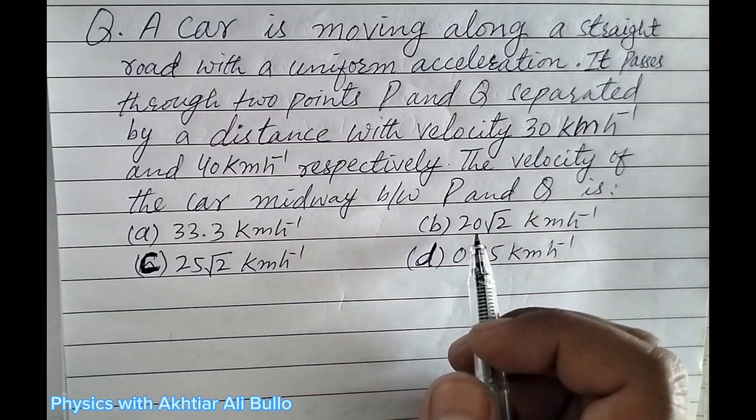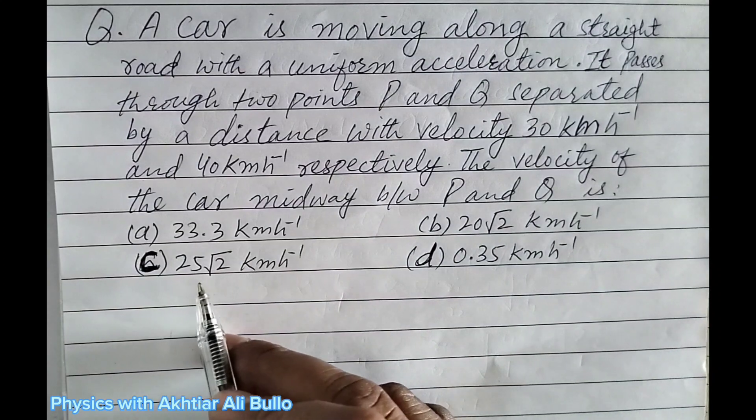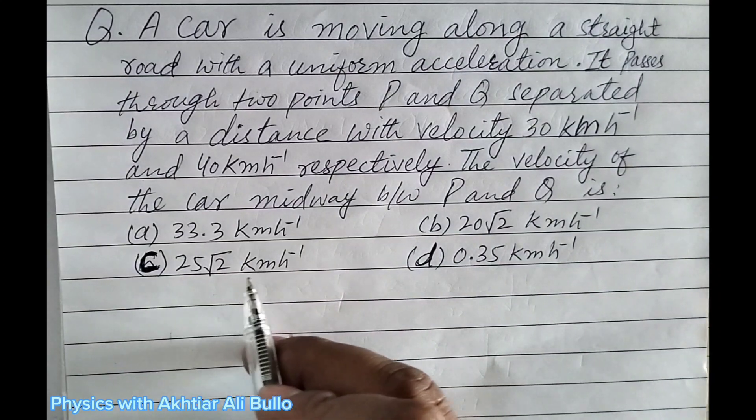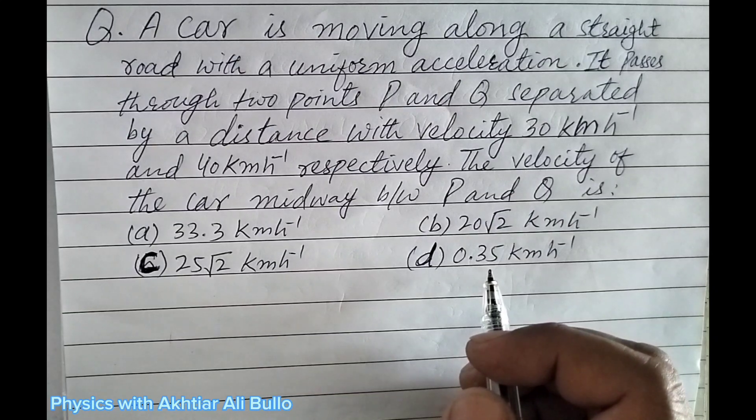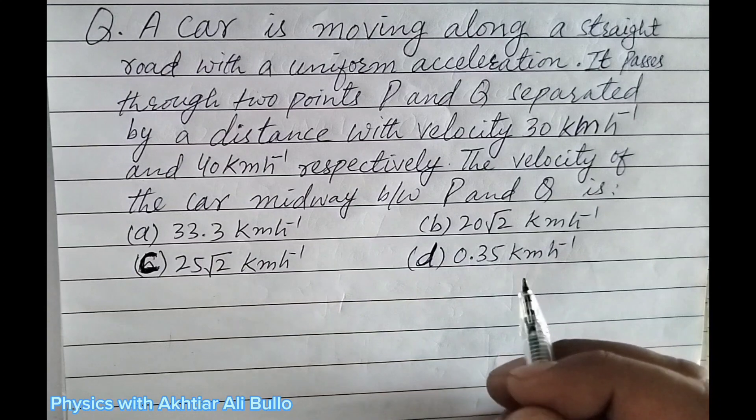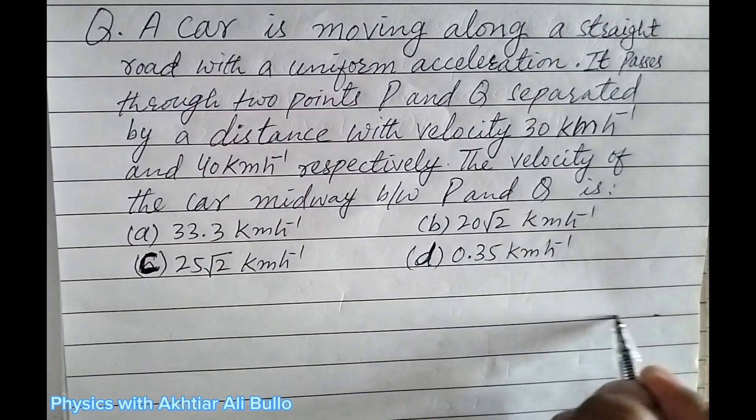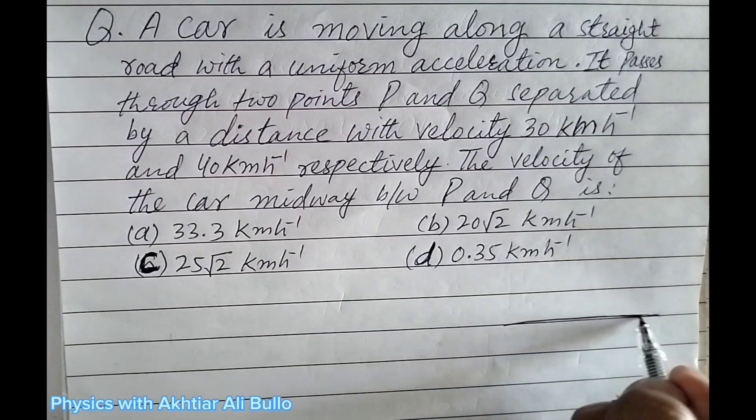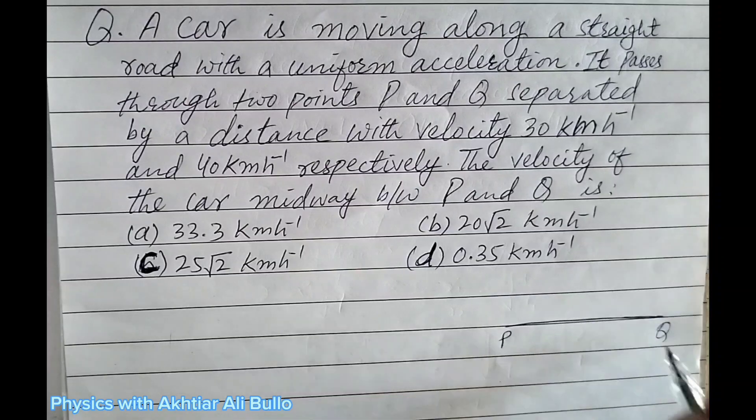(b) 20√2 km per hour, (c) 25√2 km per hour, (d) 0.35 km per hour. The point is we have obtained two points P and Q.